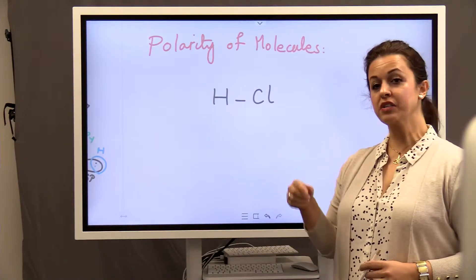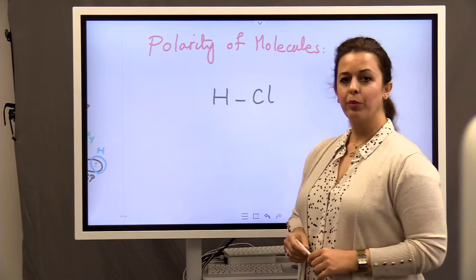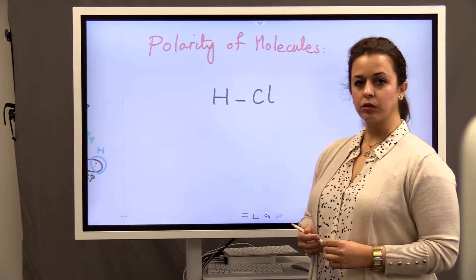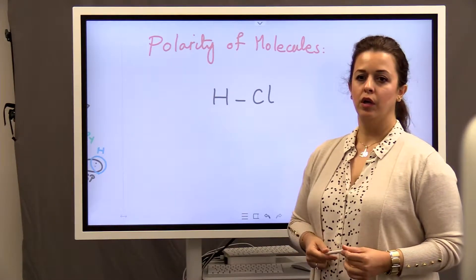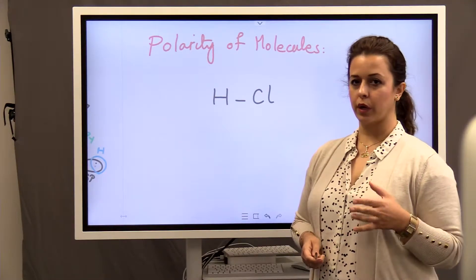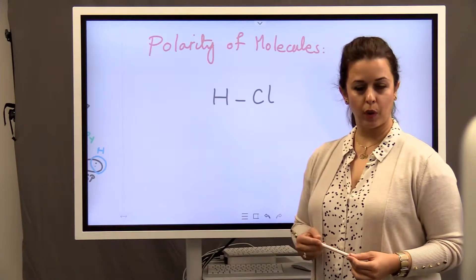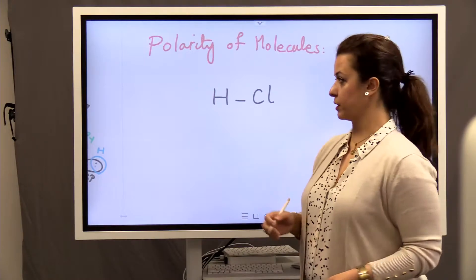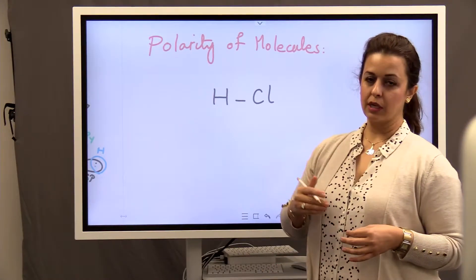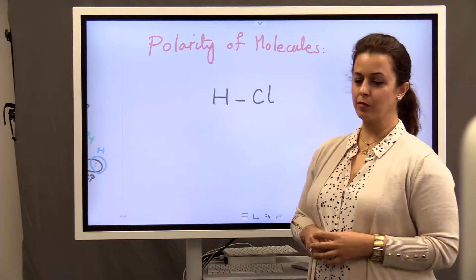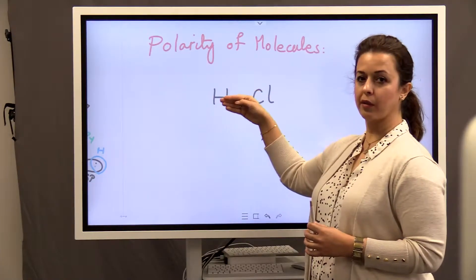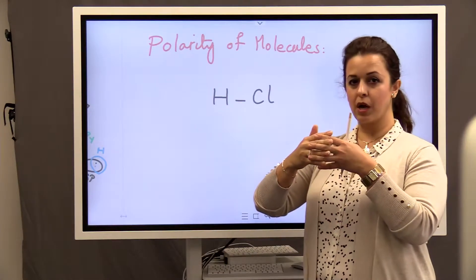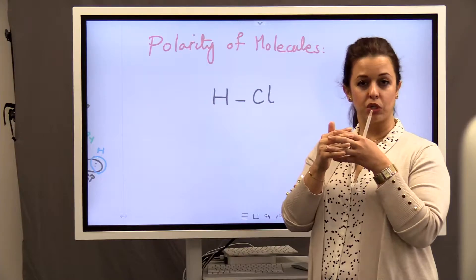Another concept left off from the first video is polarity of molecules. When you draw the molecular structure, how to find out if the bond is polar or not, if the molecule is polar or not. But everything goes back to electronegativity. You remember electronegativity is the tendency of atoms to pull the electrons in a covalent bond. So we say electrons are shared, but sometimes the electrons are not equally shared.